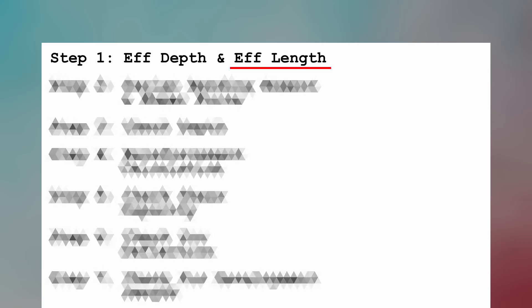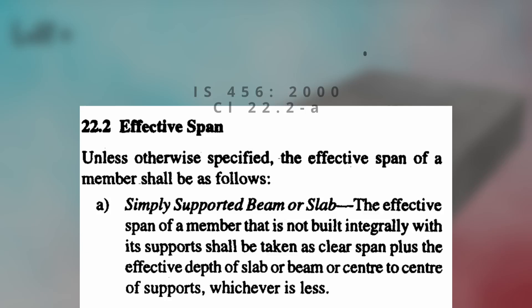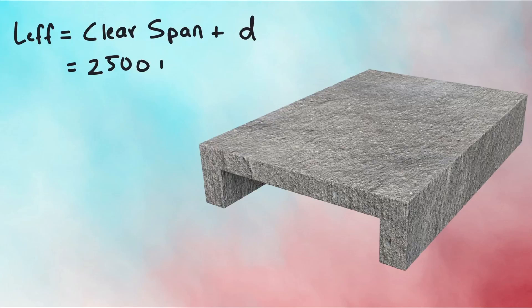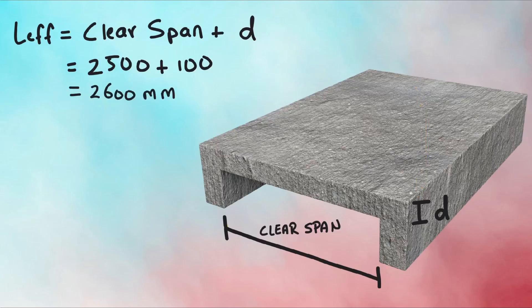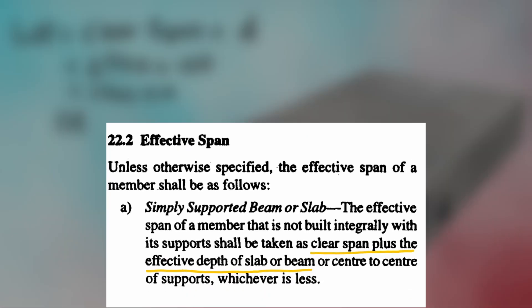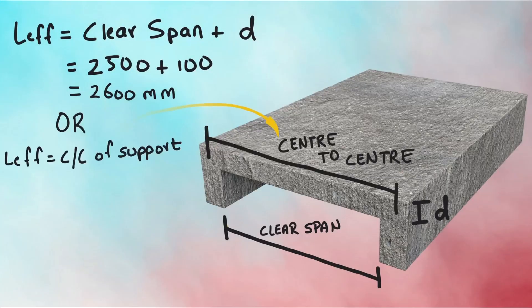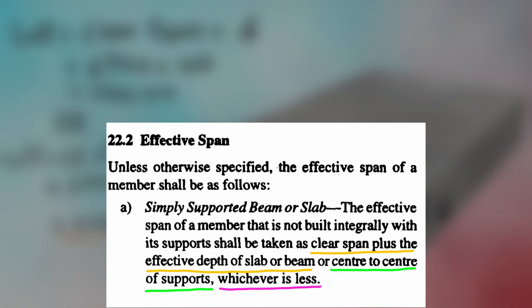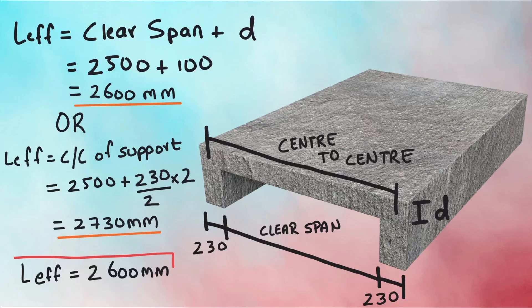Next, calculating the effective length. Effective length is calculated as per clause 22.2a which states: effective span of a member not built integrally with its support shall be taken as clear span plus effective depth, which in our case is 2500 as clear span plus 100 mm as effective depth equals 2600 mm, or center to center of supports that is 2500 mm plus 230 by 2 twice which equals 2730 mm. The lesser of the two values has to be taken, so we will take the effective length as 2600 mm.